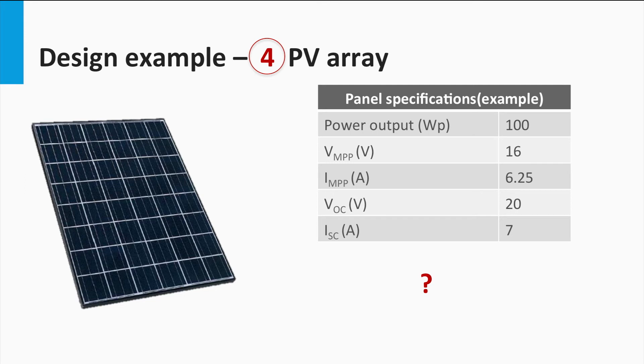Let's look at the electrical specification of an available PV module. It is a 100 Wh rated module with the given voltage and current parameters. Now we need to find out how many of such modules are required to power the loads.